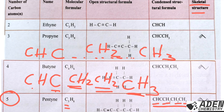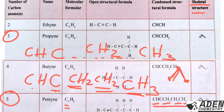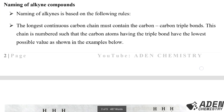The skeleton formula for alkynes is drawn the same way as for alkanes and alkenes — the only difference is the type of bond. For alkanes all bonds are single; for alkenes there is a double bond; for alkynes there is a triple bond. For example, propane is drawn with all single bonds, propene has a double bond between the first and second carbons, and propyne has a triple bond between the first and second carbons.